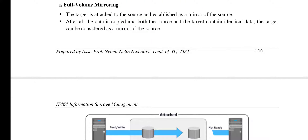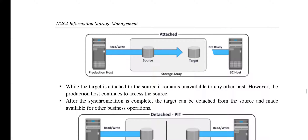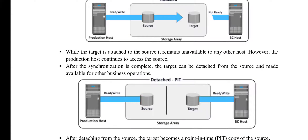The first is full volume mirroring. The idea is simple — the target is attached to the source and is a mirror of it. There are attached and detached modes. In the attached state, when the source is writing or copying to the target, the BC host cannot access the target. When the target is attached to the source it remains unavailable to any other host; however the production host continues to access the source.